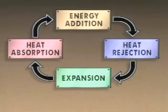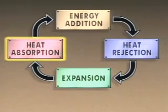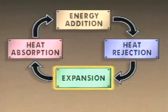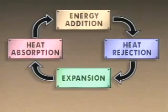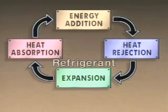We can use an illustration to identify the steps in a refrigeration cycle and see how the cycle works. The cycle we'll look at is called a vapor compression refrigeration cycle. A typical vapor compression refrigeration cycle has four basic steps: heat absorption, energy addition, heat rejection, and expansion. Since the steps repeat, the cycle is a closed system designed to operate continuously. The cycle uses a fluid known as a refrigerant to transport heat through the system.